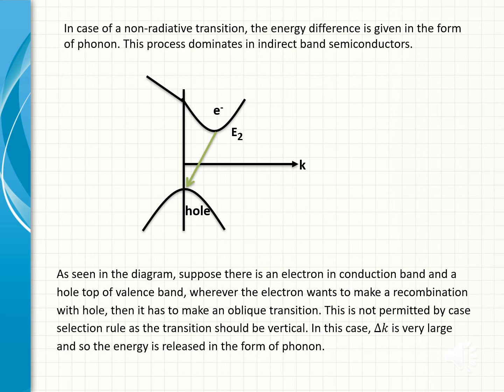As seen in the diagram, suppose there is an electron in conduction band and a hole top of valence band. Wherever the electron wants to make a recombination with hole, then it has to make an oblique transition. This is not permitted by case selection rule as the transition should be vertical.